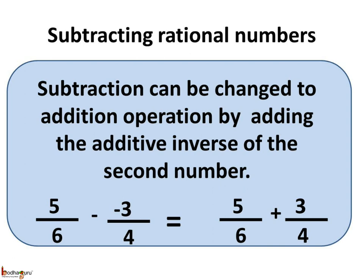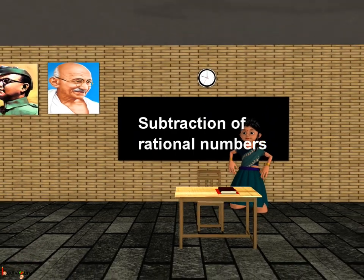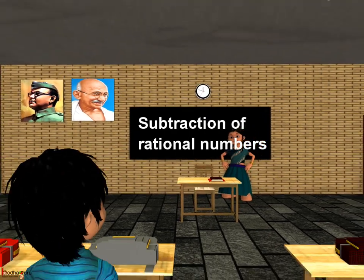To sum up, in case of subtracting rational numbers, subtraction can be changed to an addition operation by adding the additive inverse of the second rational number. For example, 5/6 minus minus 3/4 is the same as 5/6 plus 3/4. That's all for now. Bye-bye children.